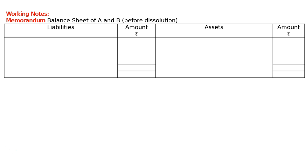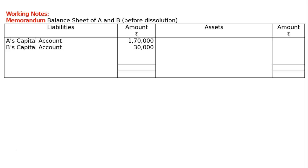To find sundry assets, we prepare a working note — a memorandum balance sheet of A and B before dissolution. Starting from the liability side: A's capital account rupees 1 lakh 70,000; B's capital account rupees 30,000; A's loan account rupees 1 lakh; trade creditors rupees 2 lakh. On the asset side: B's loan account rupees 20,000, because B has taken a loan from the firm.